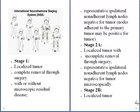Stage 2 is divided into stage 2a and stage 2b. In stage 2a, we have a localized tumor, but with incomplete removal through surgery, and the representative ipsilateral non-adherent lymph nodes are negative for the tumor microscopically.